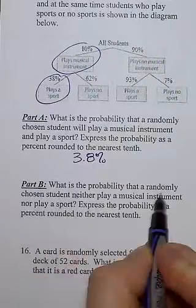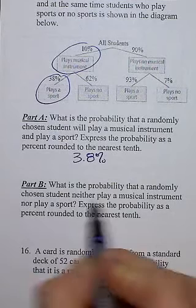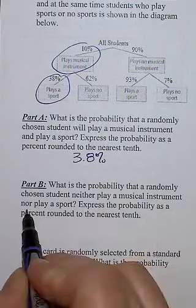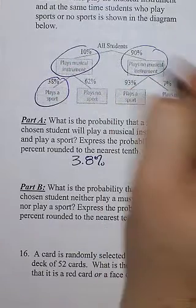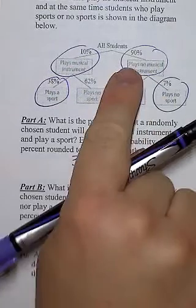What is the probability a randomly selected student neither plays a sport nor plays an instrument or a sport. So no instrument and no sport. Okay. This is confusing.